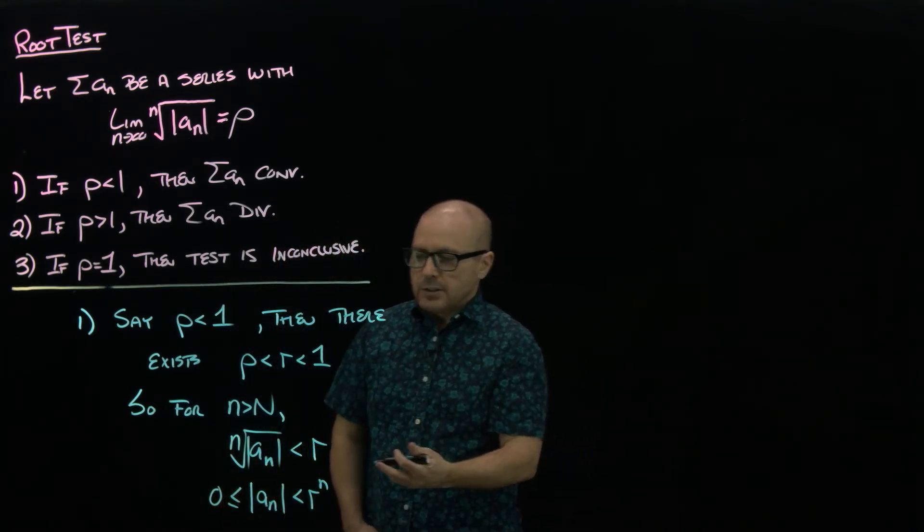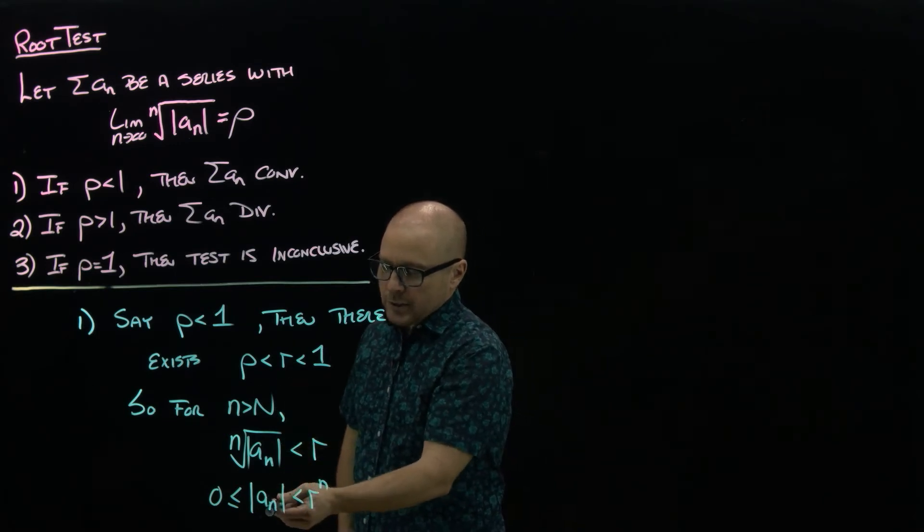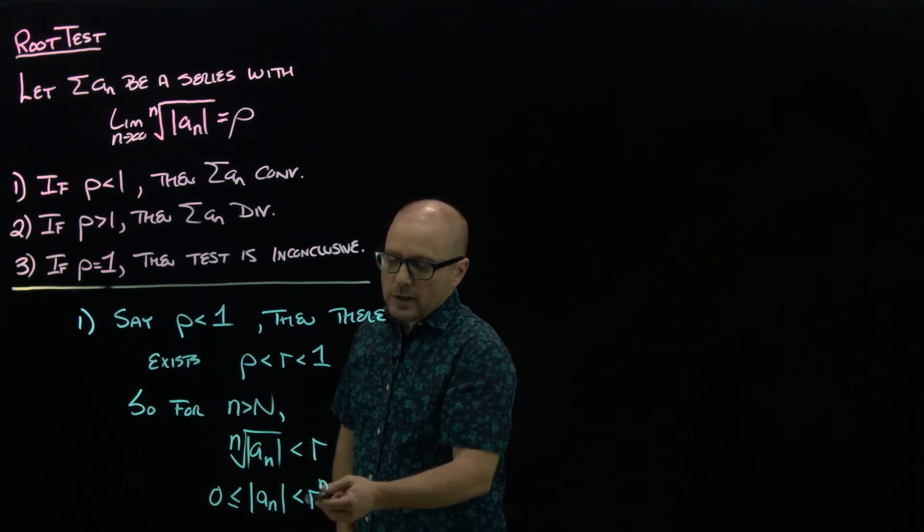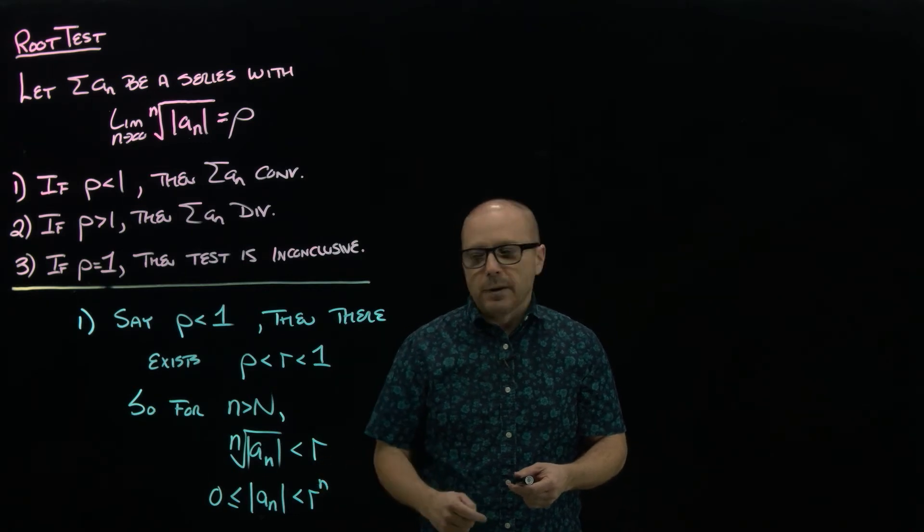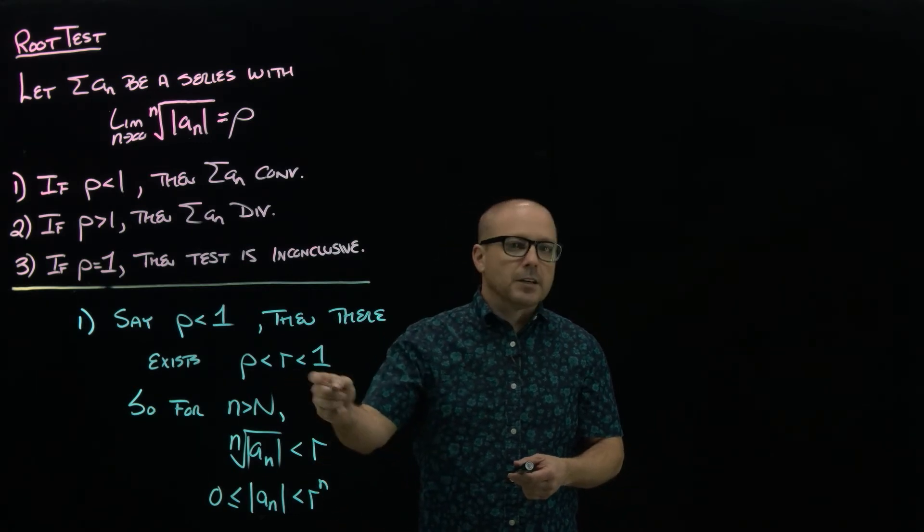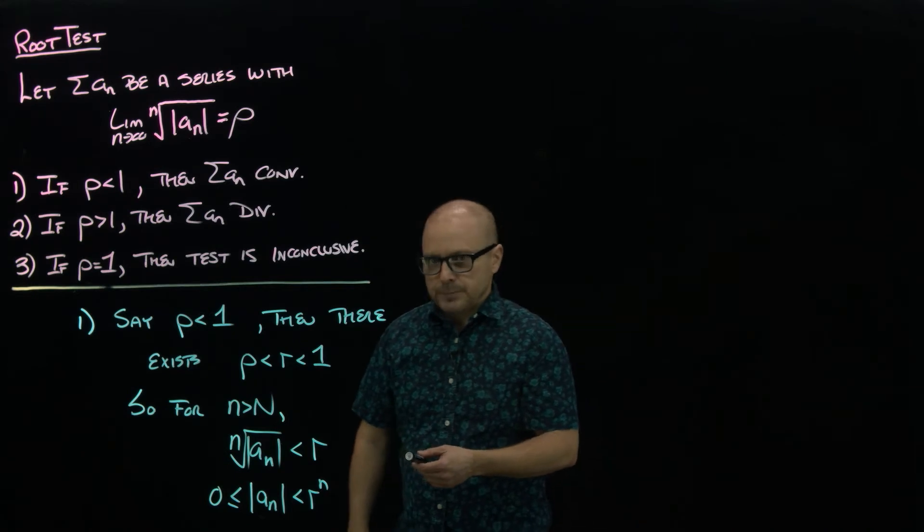What have we just done? We have just argued that eventually all the terms in absolute value are less than these things. Well, these are the terms of a geometric series, and specifically a convergent geometric.